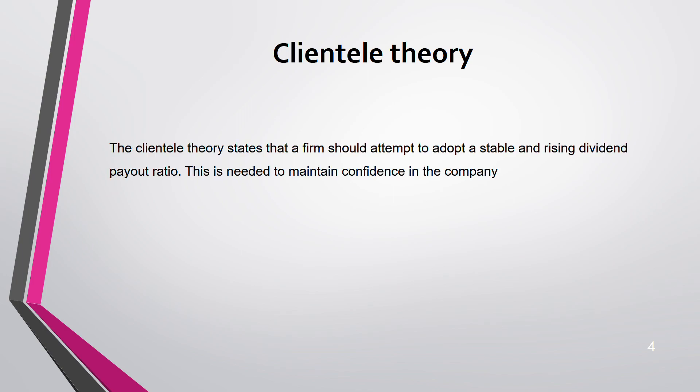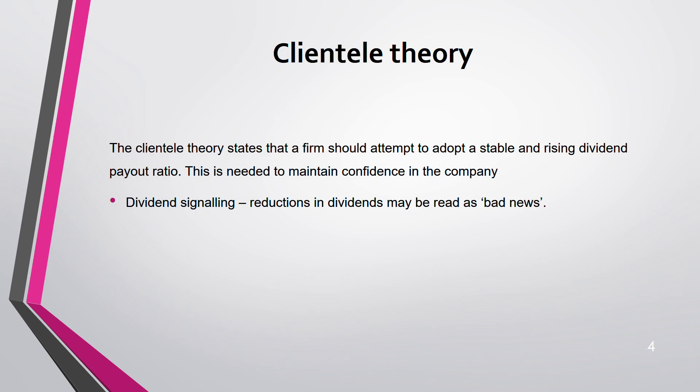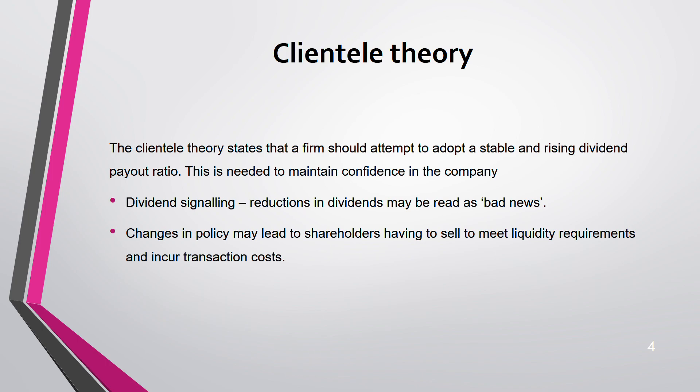Theory 6 says that a firm should adopt a stable and rising dividend payout ratio, because it maintains confidence in the company. A rising dividend payout ratio signals that this is a growing company. Dividend signaling works as a signal in the market — if dividends are reduced, this is considered bad news. Through dividends, you signal how your company is doing.